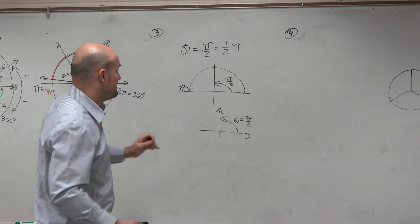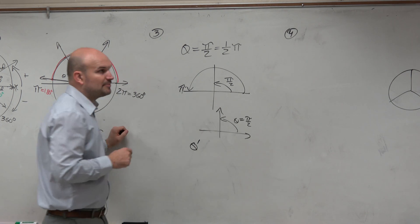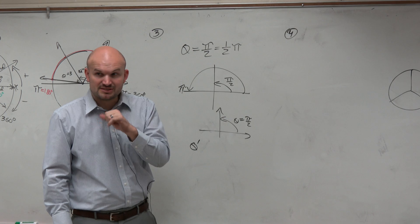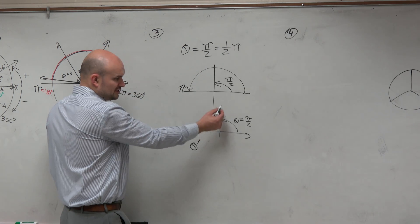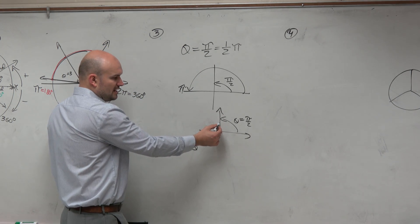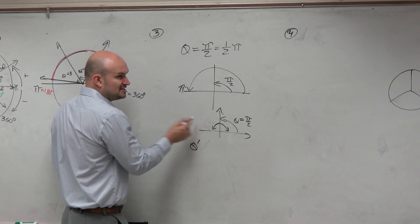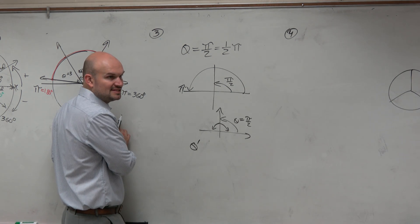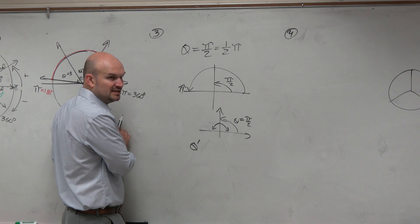So now, let's go and find our theta prime. Theta prime represents the reference angle. That is the acute angle between the terminal side and the x-axis. Here's the terminal side. Well, if I go to the left or go to the right, do I have an acute angle that is the distance between that side and the x-axis?